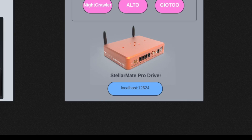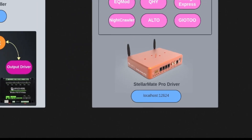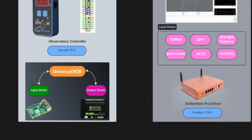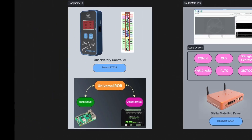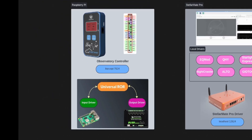The other one is over on the Raspberry Pi, which is a completely separate INDI server that is controlling my weather controller, the GPIO, and my roof controller. I just called it ecrispy, and it's running at the regular INDI port 7624.